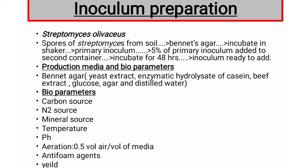Another bioparameter is aeration and agitation. Aeration and agitation are required for Streptomyces growth. The aeration requirement is about 0.5 volume of air per volume of media. A high rate of aeration causes foam formation, so to solve the foam problem, we can add anti-foam agents. Anti-foam agents include soybean oil, corn oil, lard oil, etc. The final bioparameter is yield, which is about 1 to 2 mg per litre.